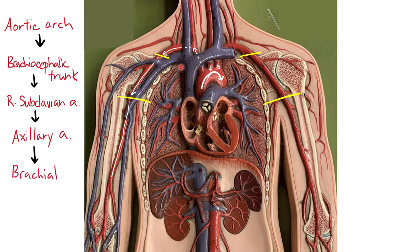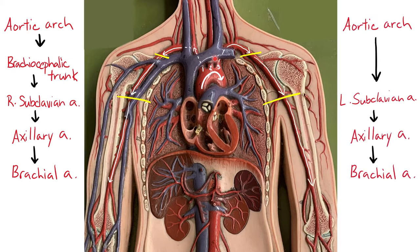The axillary artery is then going to become the brachial artery after it passes the lower margin of the teres major muscle. The muscles aren't present on this circulatory model, but we can approximate that location. On the left side, the vast majority of this looks the same — only we get there via the left subclavian artery directly from the aortic arch, which then becomes the axillary artery after passing the first rib, and then the brachial artery after passing the teres major muscle.